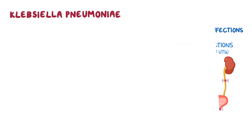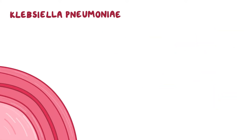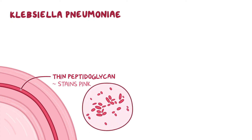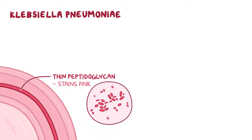Klebsiella pneumoniae has a thin peptidoglycan layer, so like other gram-negative bacteria, it stains pink. And since it's a bacillus, it looks like a little pink rod under the microscope.